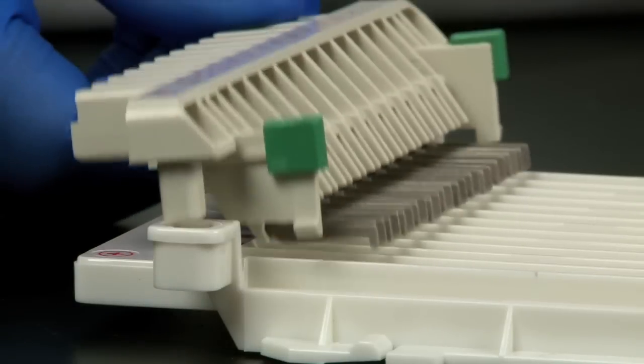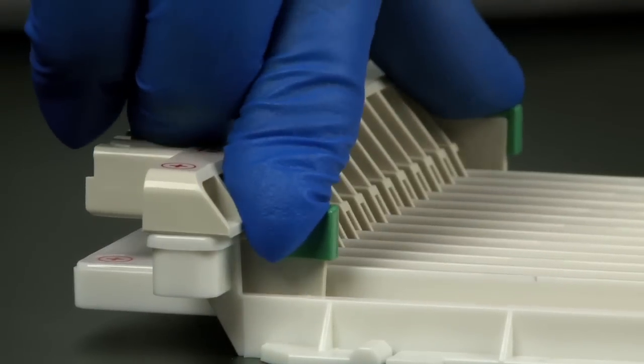Press the electrode assembly straight down into the tray by pressing on the green tabs until you hear a click.